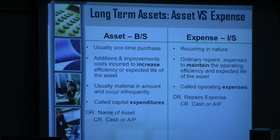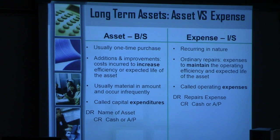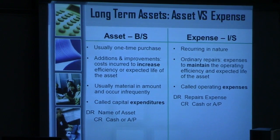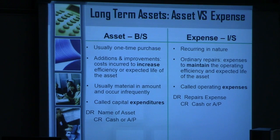You've got to look at the definitions of an asset and an expense. An asset is usually a one-time purchase. It can be additions and improvements to increase the efficiency or expected life of an asset. It is usually material in amount, occurs infrequently, and is called an expenditure. Expenses, on the other hand, are recurring in nature — they are ordinary repairs to maintain the operating efficiency of an asset. The key difference: assets increase efficiency or life, while expenses maintain it. We already know an asset has future economic value; an expense maintains that asset.